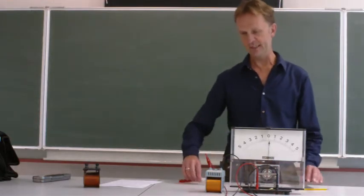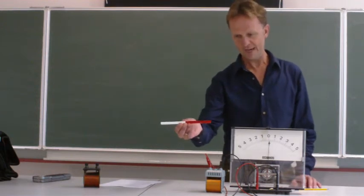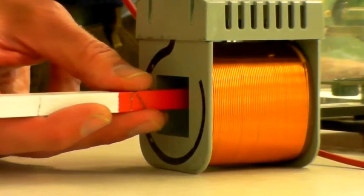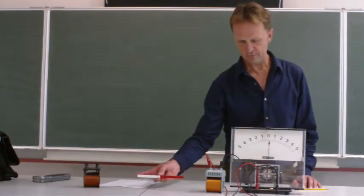However, if I take this thing here, a strong magnet, and I do the same thing, I move it back and forth in and out of the coil, what you see is this. And the faster I move it, the larger the voltage gets.